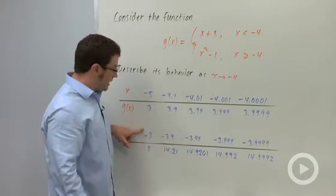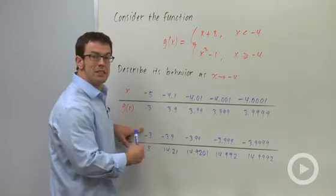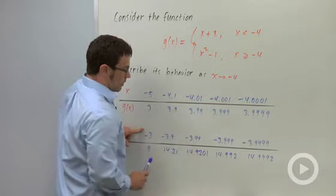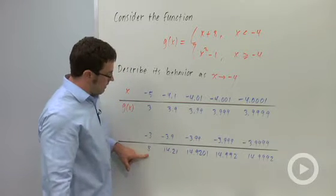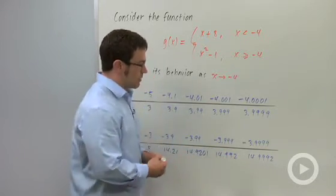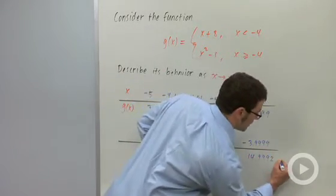Now, if we start from the right, negative 3 is to the right of negative 4, and I go to the left, I get negative 3, negative 3.9, negative 3.99. These are the values I get. 8, 14.2, 14.9. And you can see that these values seem to be getting closer and closer to 15.